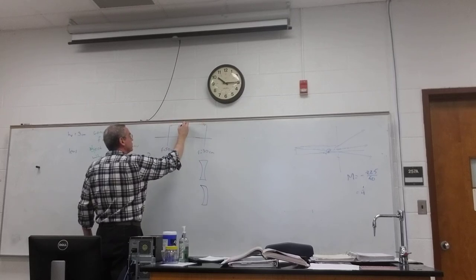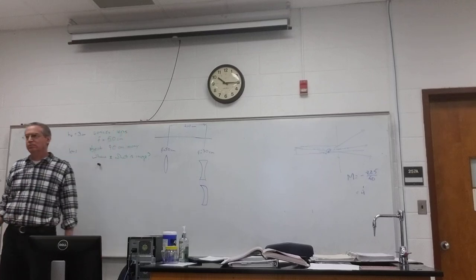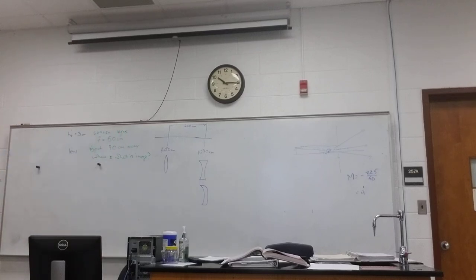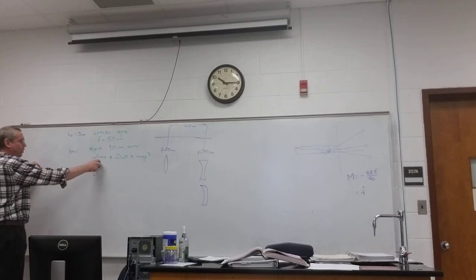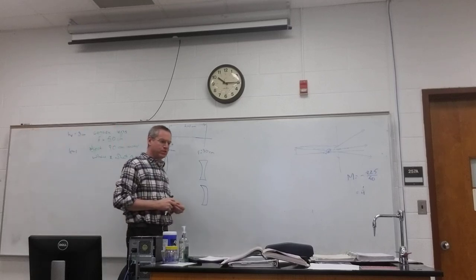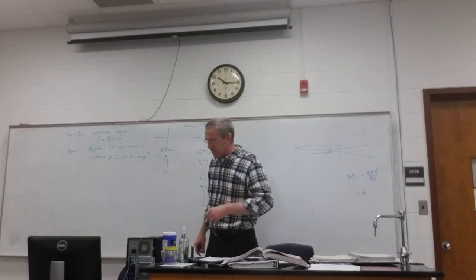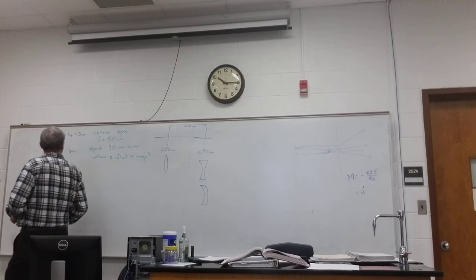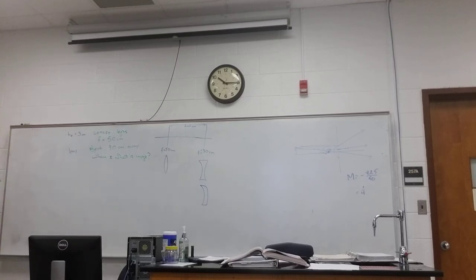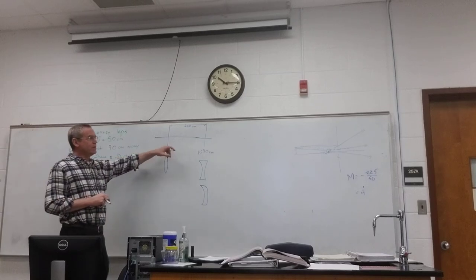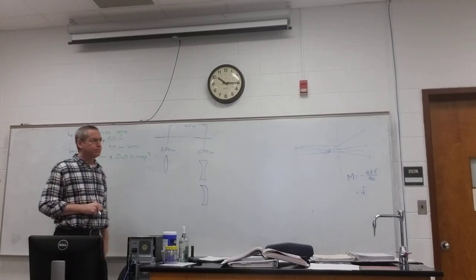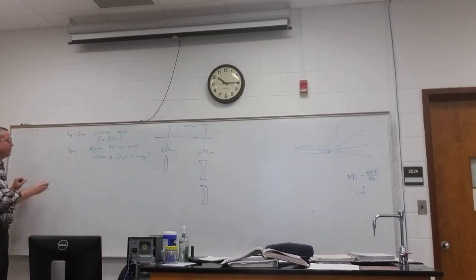The distance between these lenses, like 200 centimeters apart. The question is, where is the ultimate? Where is the image, and what is the magnification of the image, and so on? What can we find out about the image? All right, so when dealing with a double system like this, you do one lens at a time. So the image of the first lens is the object of the second lens.